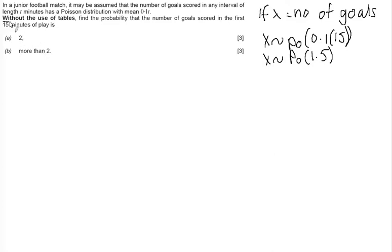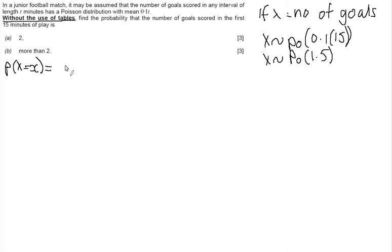Notice it says, in bold letters, without the use of tables. So you are going to have to show that you can use the formula. Remember that the probability P(X = x), which can be found in your statistical formula sheet, is equal to e to the minus lambda times lambda to the power of x, all over x factorial.